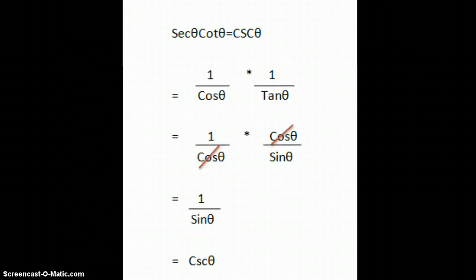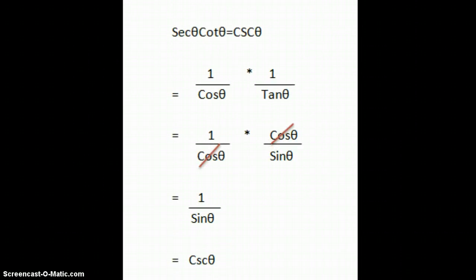Okay, so here's a verification example. We have secant of theta times cotangent theta equals cosecant of theta. So we're going to turn both of these into their reciprocal. 1 over cosine theta and 1 over tan theta. Now there are two ways of looking at 1 over tan theta.